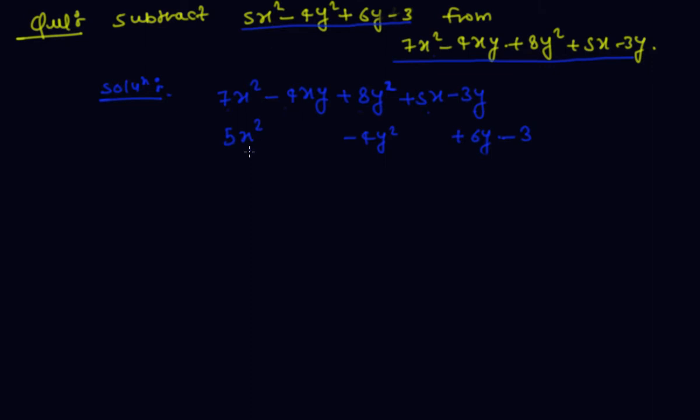And second expression below: 5x square. We see 7x square and 5x square are like terms. Minus 4y square and 8y square, 4y square like terms. 6y and 3y are like terms, so written below 3y minus 3.